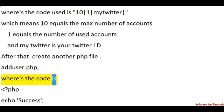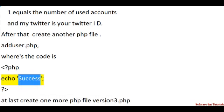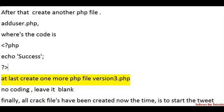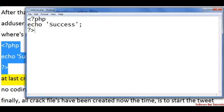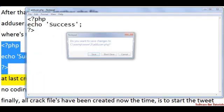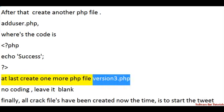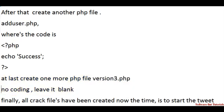The code for adduser.php is: <?php echo 'success'; ?>. At last, create one more PHP file: version3.php. No coding needed — leave it blank.